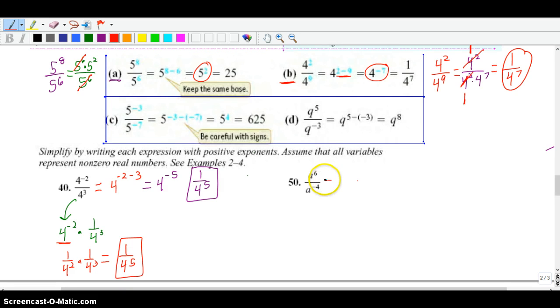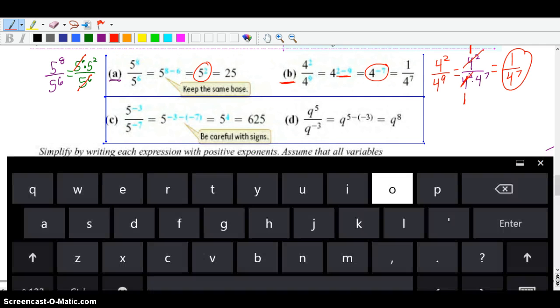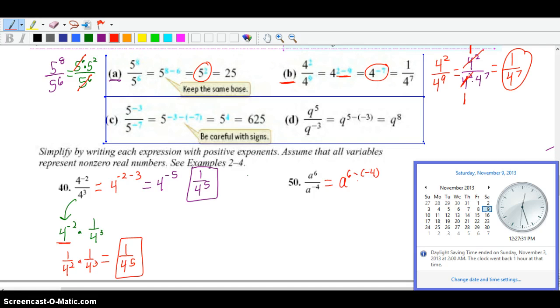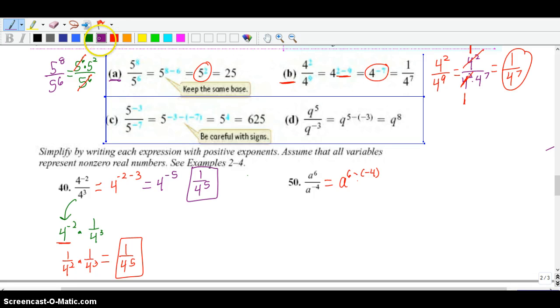Another way you could look at it is you could kind of separate these. You could have 4 to the negative 2 times 1 over 4 to the 3rd. And then you take the reciprocal of this, so it becomes 1 over 4 squared times 1 over 4 to the 3rd. And when you multiply them together, you get the same exact answer. I'm not trying to confuse you by showing you multiple ways of doing it. It's just you'll have a better understanding the more kind of ways you can see how these are manipulated. Same thing on 50. If you want to, just do the quotient rule, a to the 6 minus a negative 4. So now you have double negatives. So it's going to be a to the 6 plus 4, which is a to the 10th.